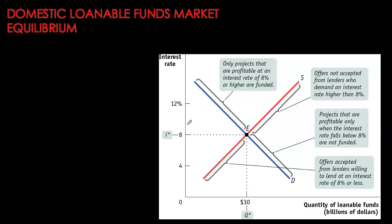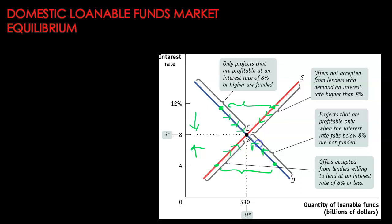Just like any market, when the interest rate is above equilibrium — say at 12% — we have an excess supply of funds. Quantity supplied is much higher than quantity demanded, and this surplus will push the interest rate down toward equilibrium. Conversely, if interest rate is below equilibrium — say at 4% — we have an excess demand for funds: too many borrowers at the lower cost but not enough sellers willing to lend. This shortage pushes the interest rate up until the shortage is eliminated and we return to equilibrium.